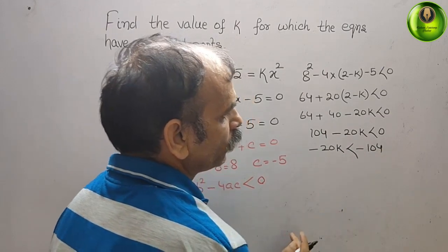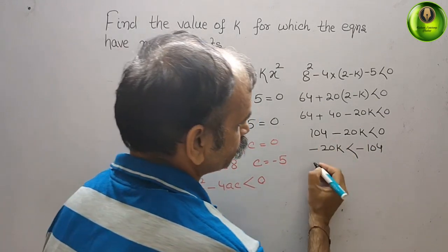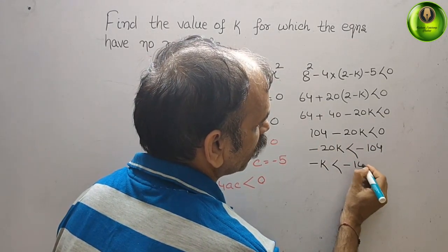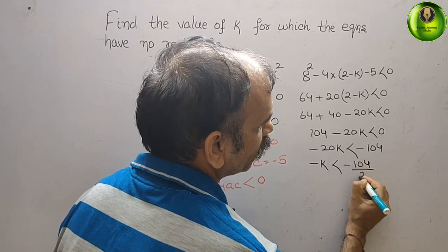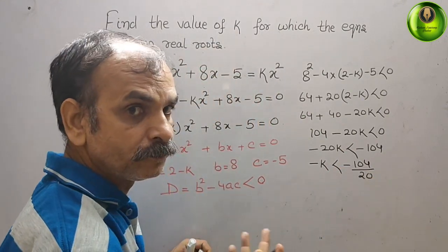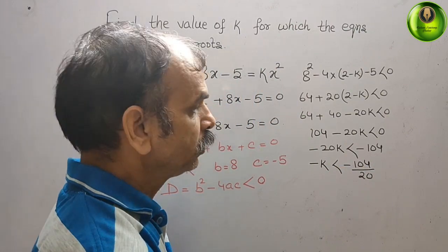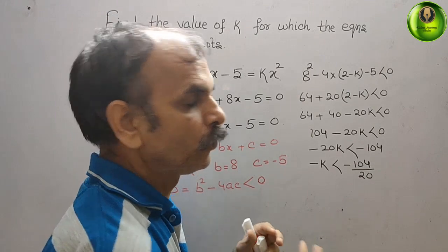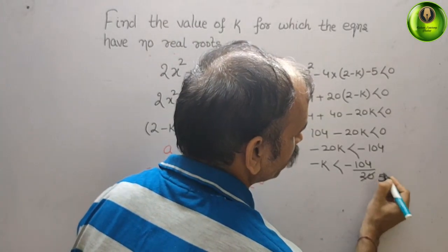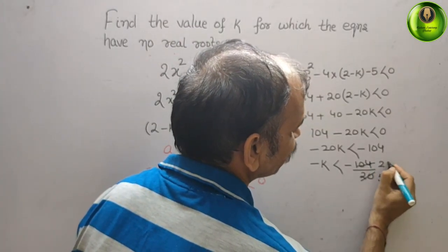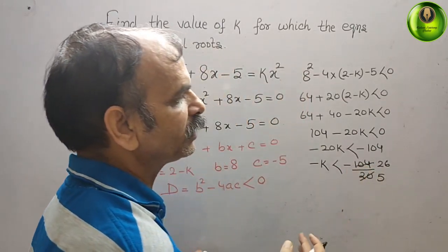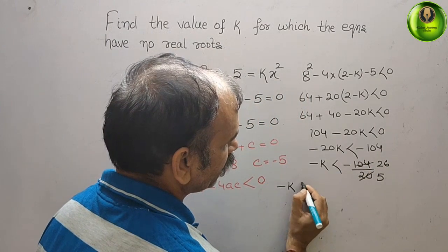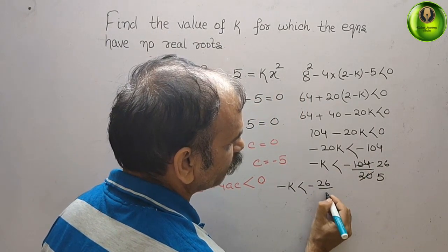Now what is your minus k? First minus k is less than minus 104 by 20. You can see it is divisible by 4, so we can go for that. This is 5 and this is 26. Minus 26 by 5. Now it will be minus k is less than minus 26 by 5.